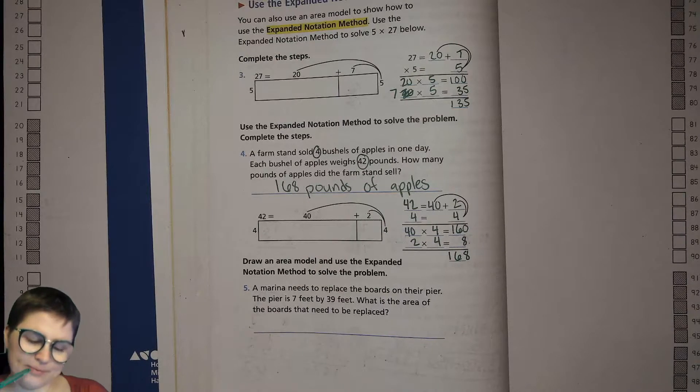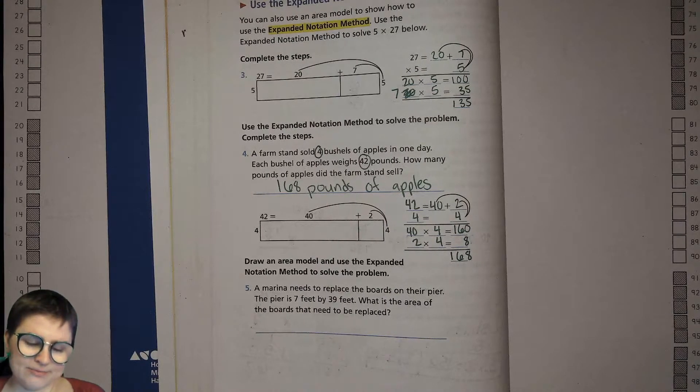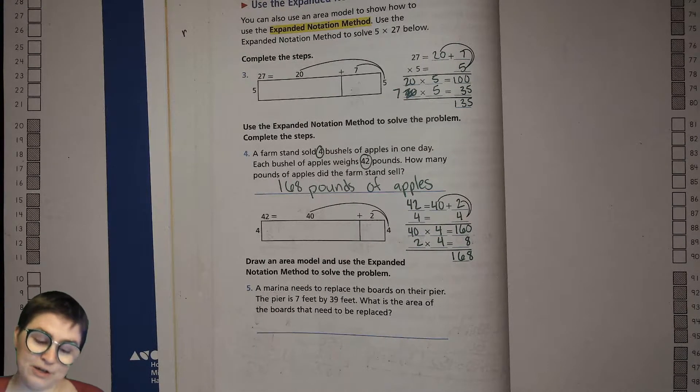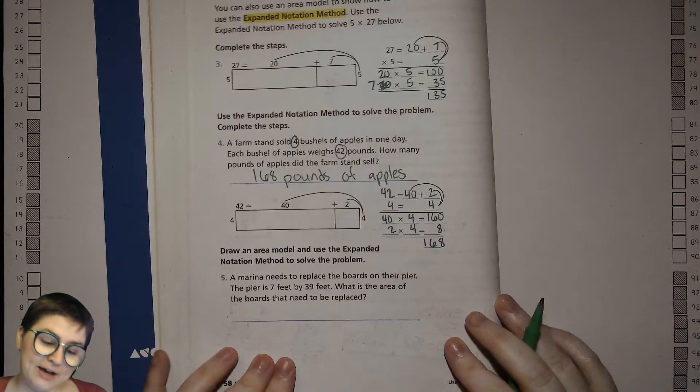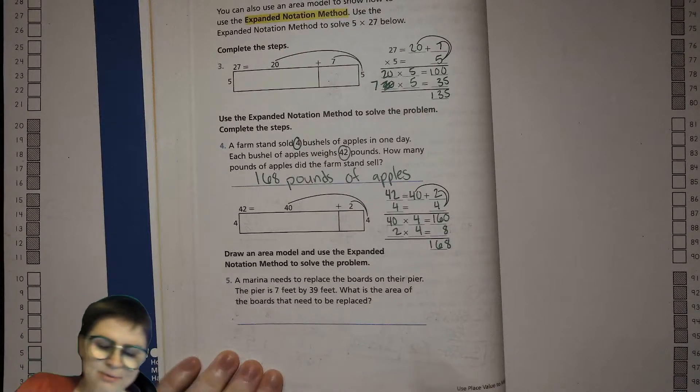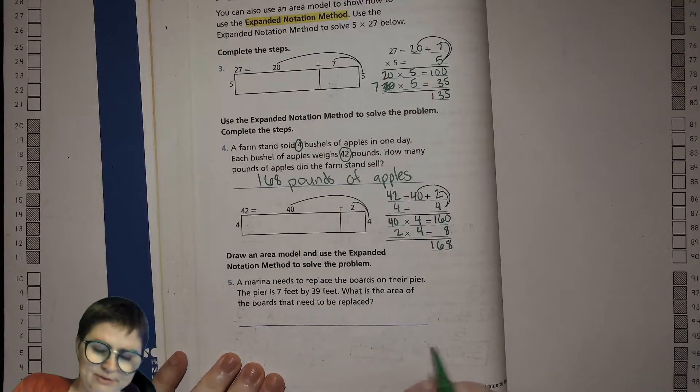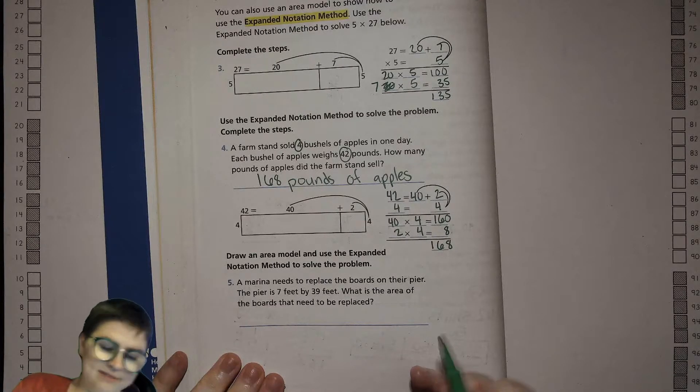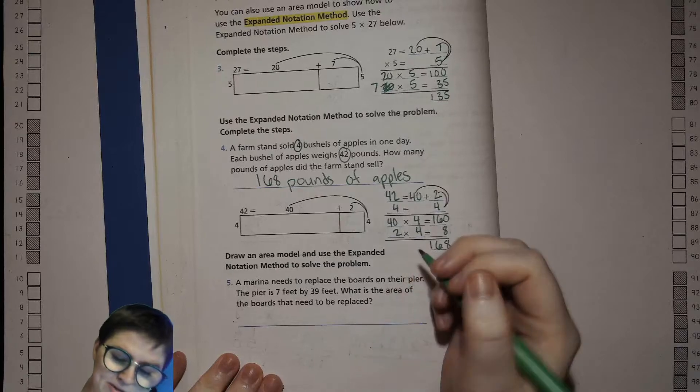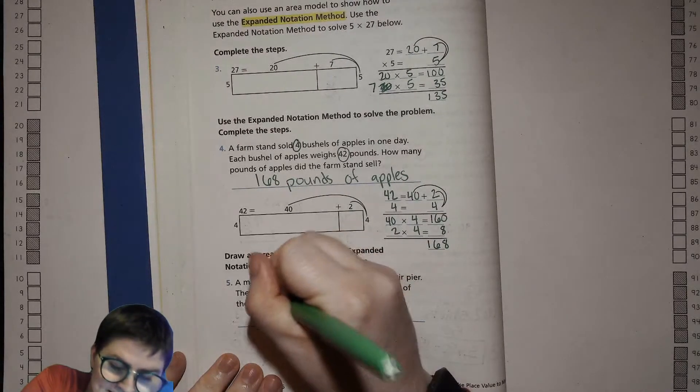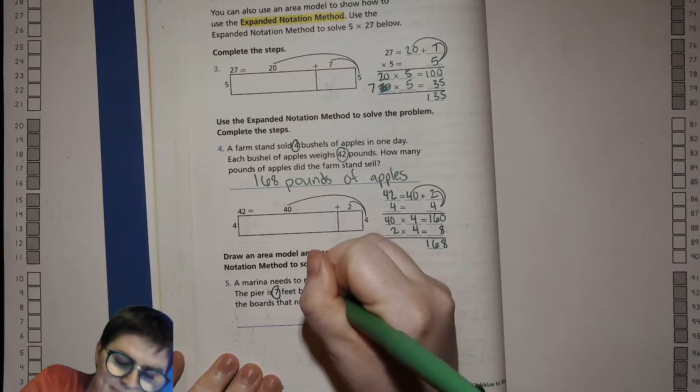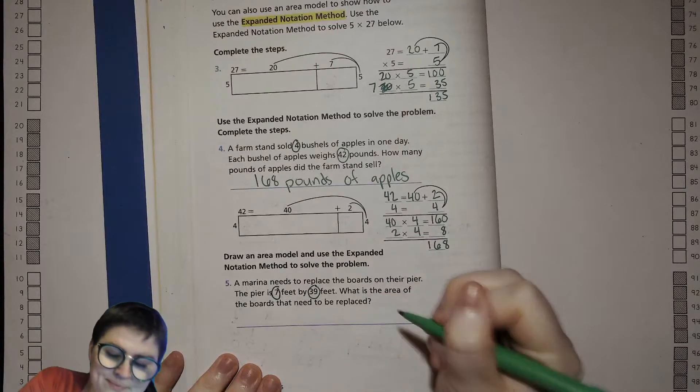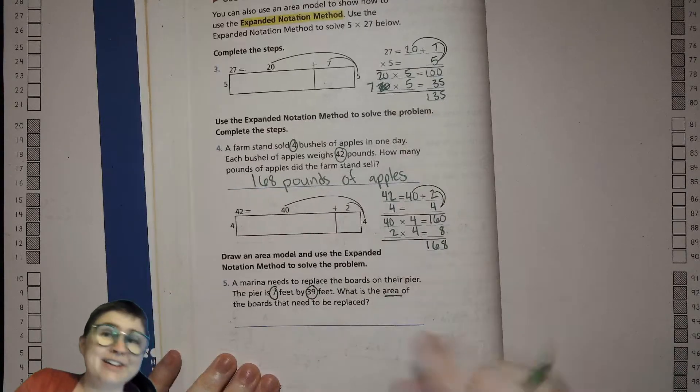Here we go. Draw an area model and use the expanded notation to solve this problem. A marina, which is like a place where you have boats, needs to replace the boards on the pier. The pier is 7 feet by 39 feet. What is the area? Area is a hint that you're going to multiply the length and the width.